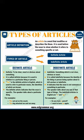Indefinite means something is not clear. These types of articles are called indefinite because the identity of the thing or person being spoken about is left unclear or indefinite. The indefinite articles in English are "a" and "an."